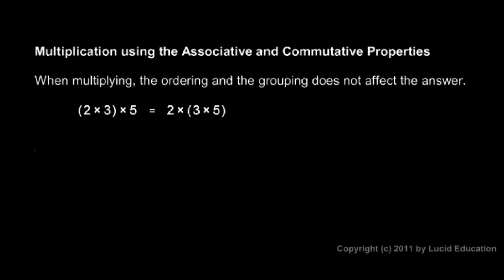Multiplication using the associative and commutative properties. When we're multiplying, the ordering does not matter and the grouping does not matter. The numbers can be rearranged and grouped in any way as long as they're all multiplied together. The ordering and grouping doesn't affect the answer.